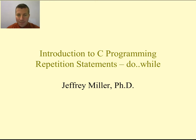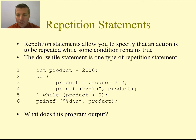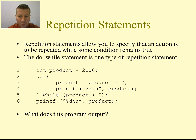Welcome to Introduction to C Programming. Today we are going to continue our discussion of repetition statements, specifically talking about the do-while loop. As we learned before when we talked about while loops, repetition statements allow us to specify an action to be repeated as long as some condition remains true. Do-while is another type of loop that will continue to repeat as long as a condition is true.